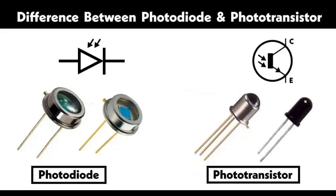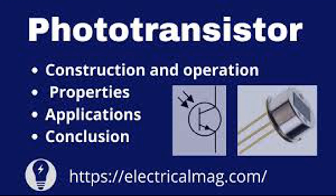Photo Darlington phototransistors consist of two transistors in a Darlington configuration, where the emitter of the first transistor is connected to the base of the second transistor. This provides a higher current gain compared to a single phototransistor — the first transistor amplifies the light-induced base current, and the second transistor further amplifies this current. Used in applications requiring very high sensitivity and amplification, such as light meters and optocouplers.